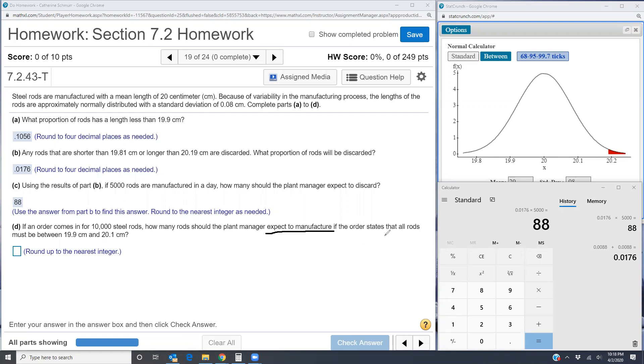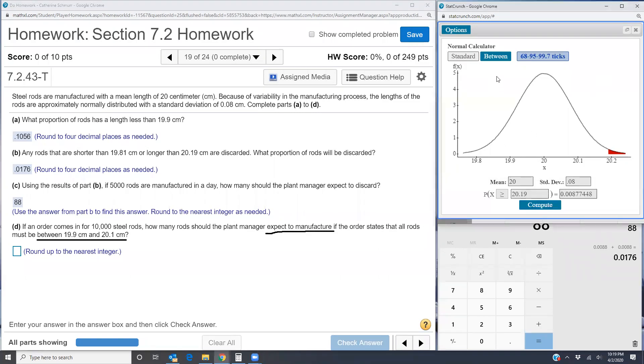If the order states that all the rods must be between 19.9 centimeters and 20.1 centimeters. So first thing I want to do is find the proportion that is between 19.9 and 20.1. I'm going to change to my between calculator.